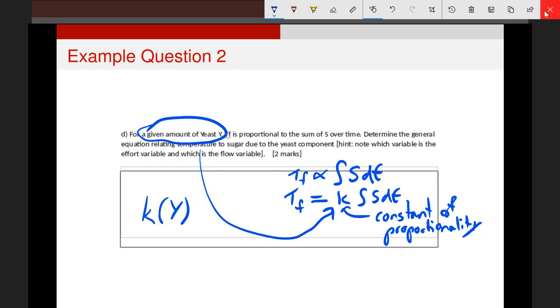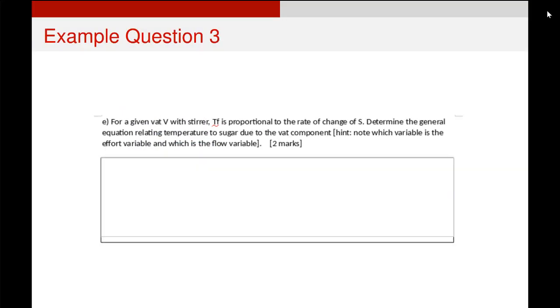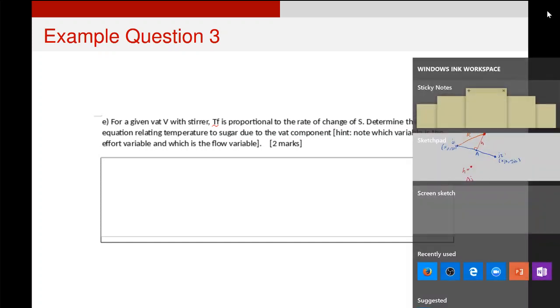Let's have a look at another question. The next question will be similar, but has some different properties. So it says, now for a given vat, the fermentation temperature is proportional to the rate of change of the amount of sugar. So how do we answer that?